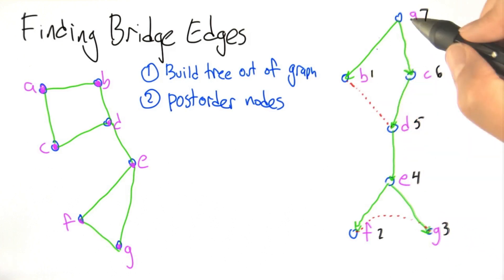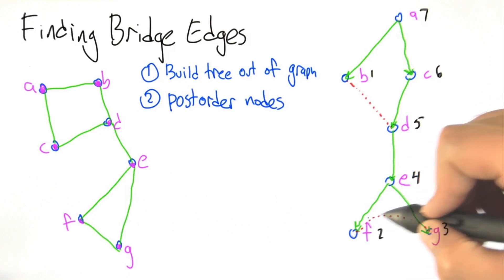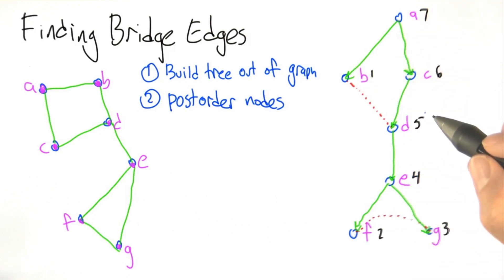As long as we now have these green edges pointing downward and these red non-tree edges connecting nodes that need to be connected if the edge wasn't actually part of this tree. Then we post ordered the nodes and now what do we do next?